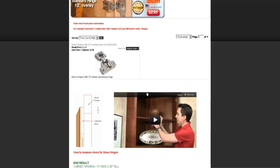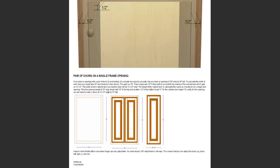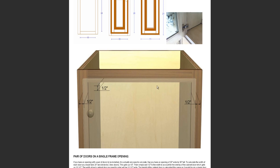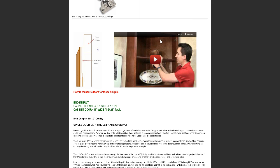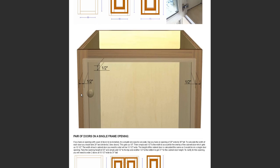If you scroll down after clicking on that hinge, you're going to see some measuring tutorials and videos that will really help you get your project dialed in. You basically take the opening of your cabinet, measure the width, and add a half inch to the left and a half inch to the right. So if the opening is 10 inches wide, you would order an 11-inch wide door. The height works the same way — add a half inch to the top and a half inch to the bottom. If the opening height is 20, order a 21-inch tall door. It's that simple.